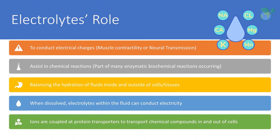Roles of the electrolytes include balancing the amount of water in your body and balancing the body's acid or base level. It assists in electrical conductivity as dissolved electrolytes, and assists in chemical reactions being part of the many ongoing biochemical reactions, including muscle contractility or neural transmission. Ions are also coupled to protein transporters to enable chemical co-transportation, making sure that your nerves, muscles, the heart, and the brain work the way they should.